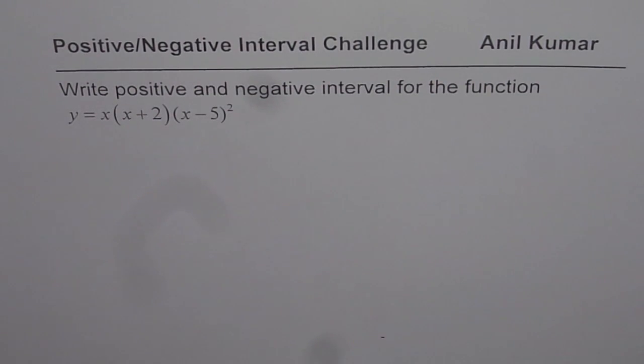Write positive and negative interval for the function y equals x times x plus 2 times x minus 5 whole square. You can pause the video, answer the question, and then look into my solution.